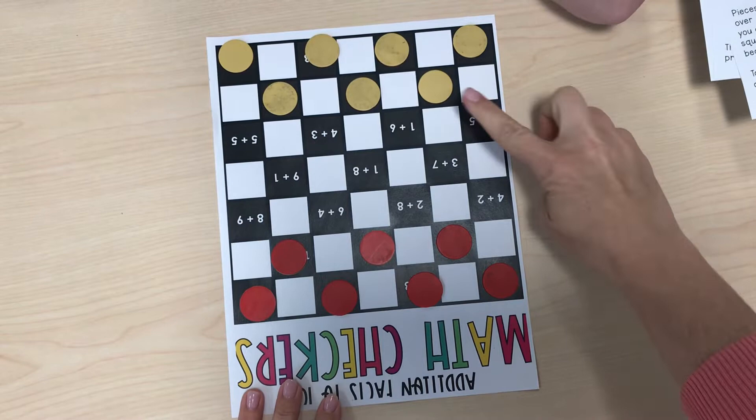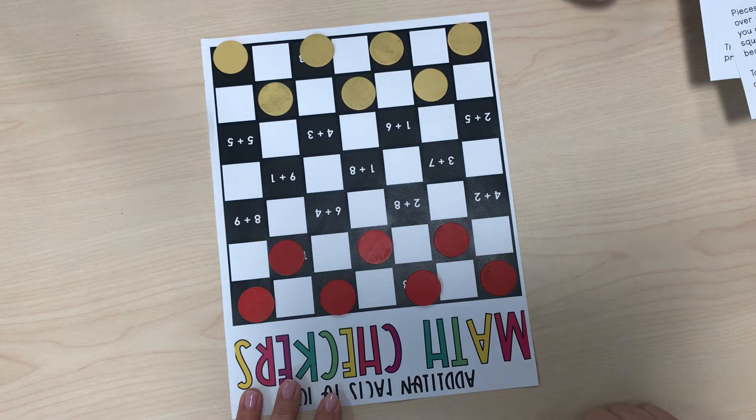My partner is yellow. My partner is going to decide which addition question he wants to answer first. And my name is Jack, and his name is Jack. Here we go, Jack.